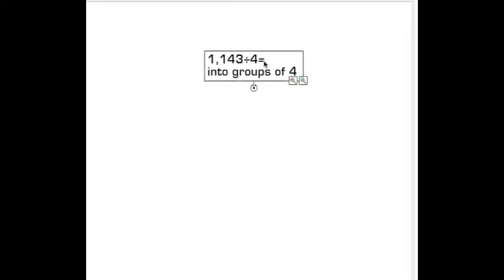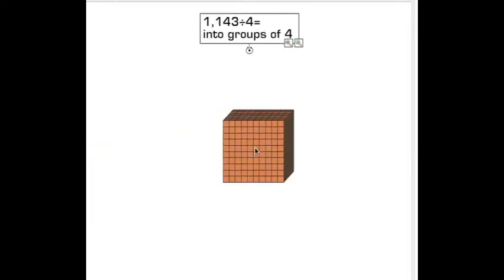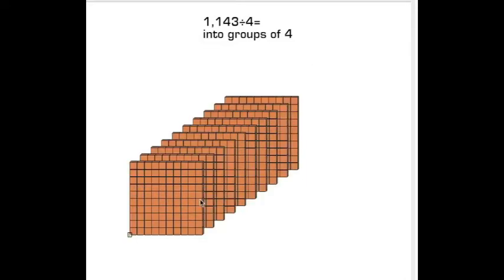First, I'll start with the thousands. I can't make a group of 4 out of 1, so the answer is 0. I have to bust the thousands open. Now I have 10 hundreds.